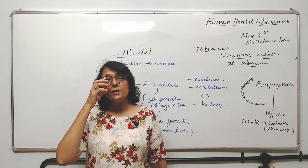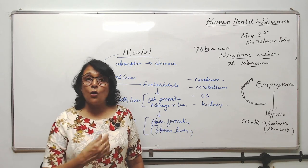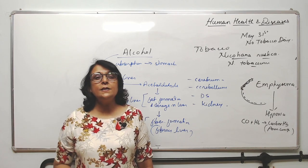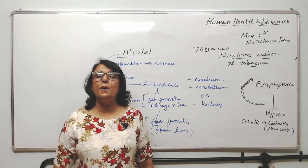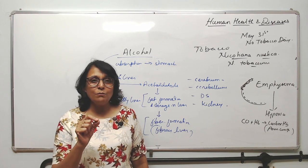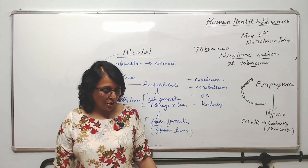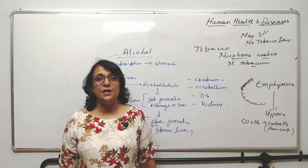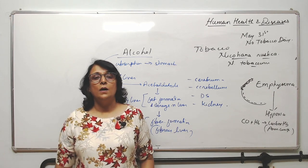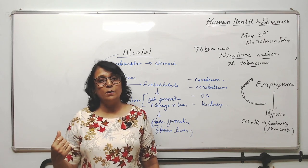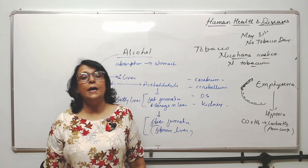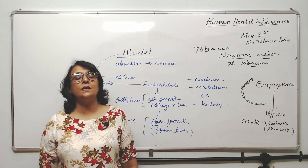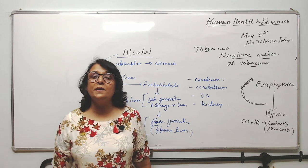Parents should look for danger signs — when a person is taking alcohol, drugs, or smoking, they start to stay away from the family. Parents can notice a change in the child's behavior, which can be an alarming sign. Seeking professional and medical help is also available through rehabilitation centers, where proper medical teams and doctors treat addiction in a scientific manner.